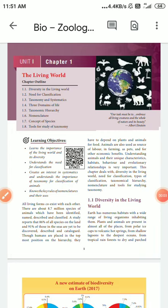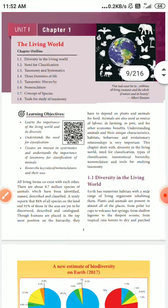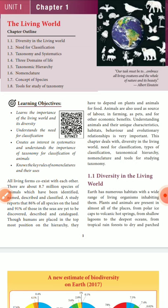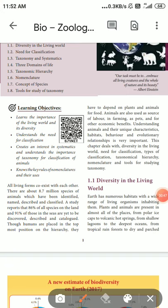Good morning students. Today we are going to see zoology, first lesson, Chapter 1: The Living World. In this living world, millions or billions of species of animals and plants are there. In these billions and millions of species, how we identify and classify them in groups — these are seen in this lesson. Of the millions of species, only 8.7 million species are identified so far; the remaining are still under research.